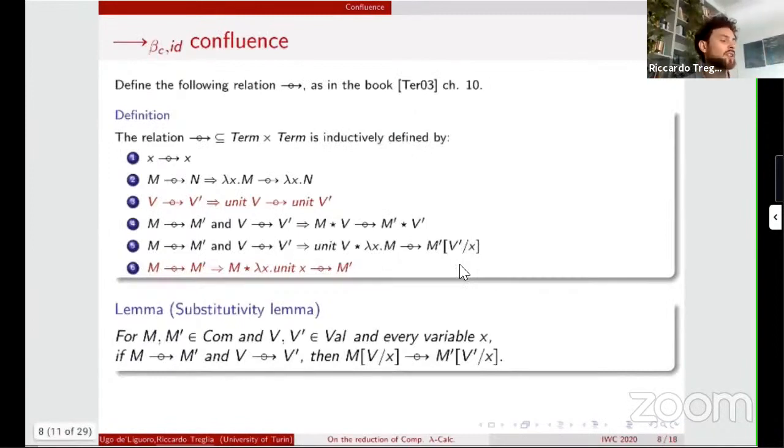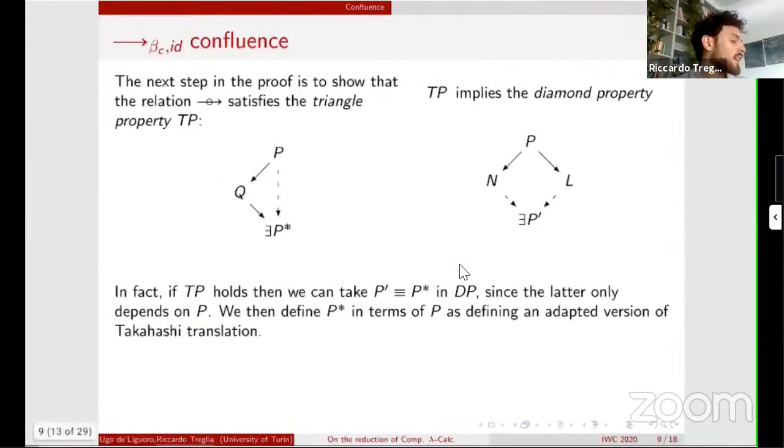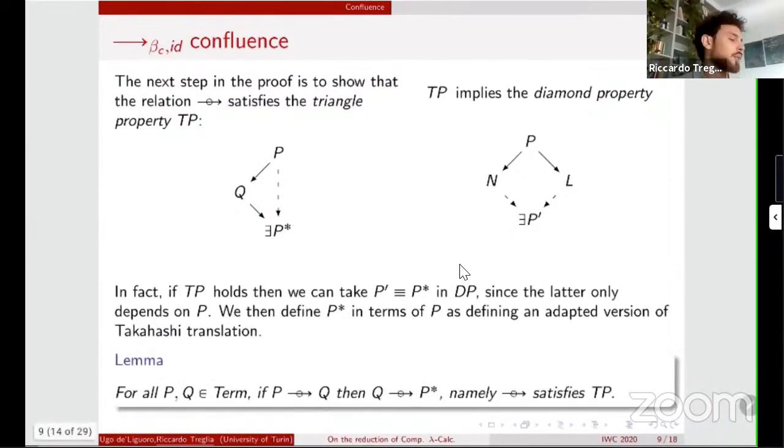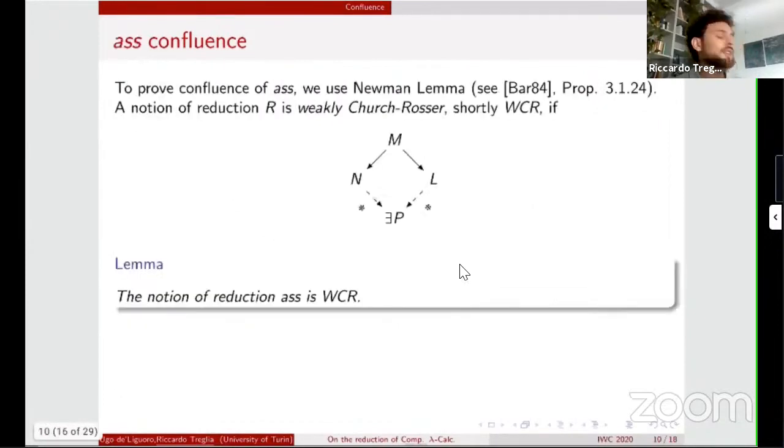This strategy was adopted also by Carrare, Guerrieri, but also by Ariola and others, talking about call-by-need calculi with the let-construct structure. So let's talk about the confluence of the first section, the reduction made just by beta and ID. We will just extend the Takahashi method for proving confluence of beta reduction, but adding two more rules, this red one, in order to deal with the unit operator. So the lifting and the ID reduction. So by means of a substantive lemma of this parallel reduction, we can prove that this parallel reduction is exactly in the middle between the reduction and its reflexive transitive closure. Then we will prove that the triangle property is satisfied by this parallel reduction. This implies the diamond property, and so in the end, we will prove that this reduction is confluent.